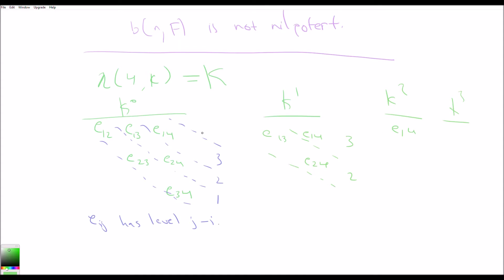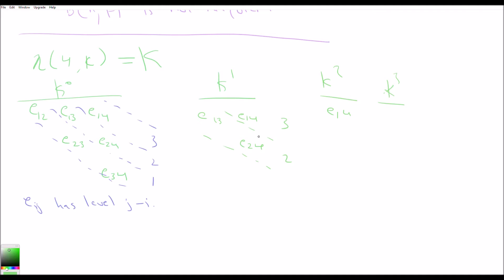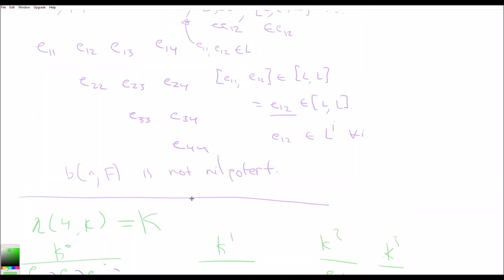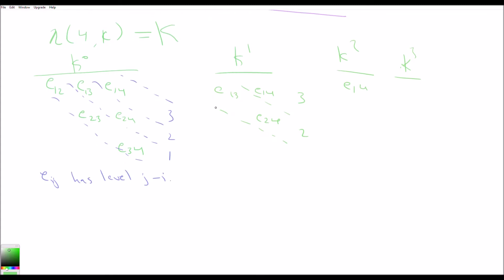We can show this by an inductive argument. What we notice is that each time we bracket with k, we lose a level. Because we only have a finite number of levels in the strictly upper triangular matrices, and there are no diagonal elements eii like in the upper triangular matrices, the strictly upper triangular matrices must be nilpotent because the lower central series will terminate.